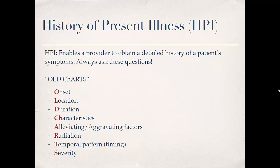Alleviating and aggravating factors: what makes the pain better, what makes it worse? If they have chest pain, does sitting down help it go away? Does the pain come on when they're exercising? Radiation — is it radiating down their arm, going straight through to the back, to the shoulder, or down to the foot? These are very common questions. And finally, severity — on a scale of 0 to 10, how bad is the pain? You can also ask: have you ever had pain like this in the past?